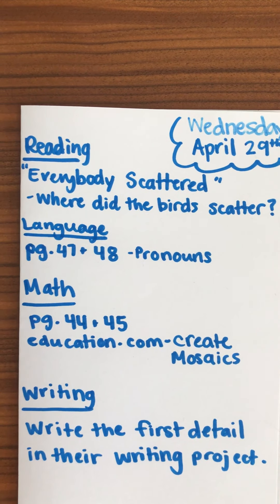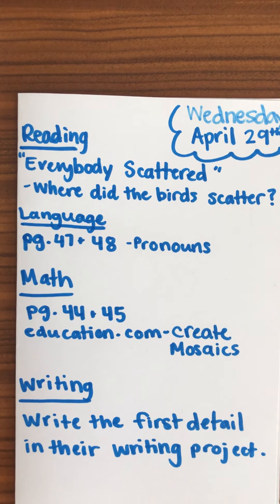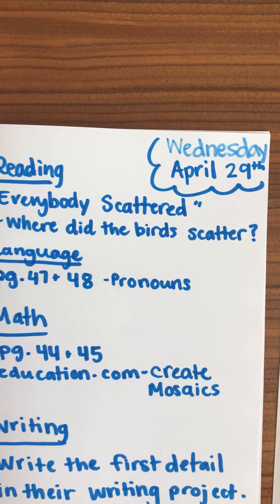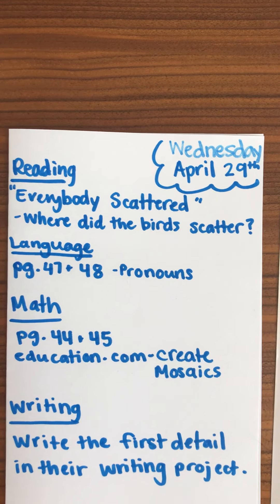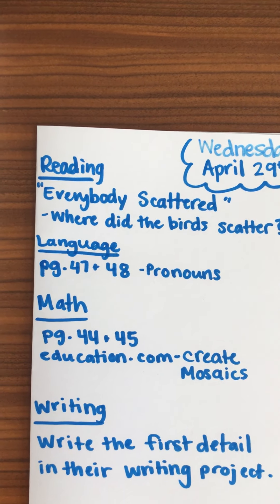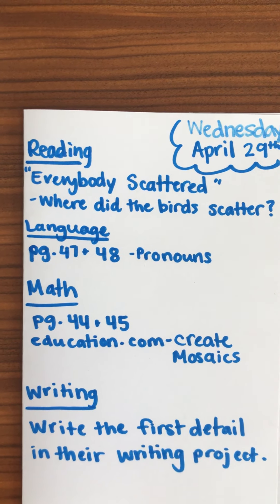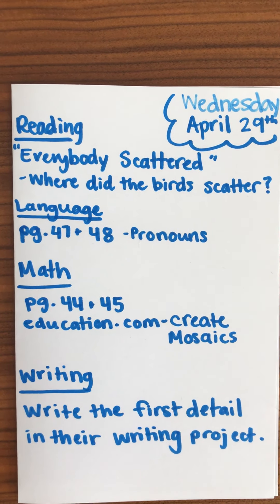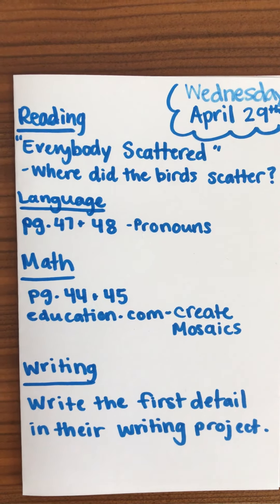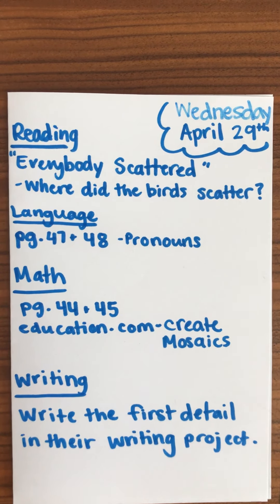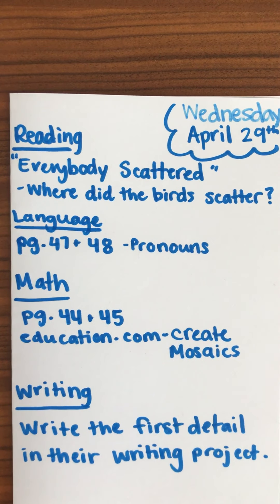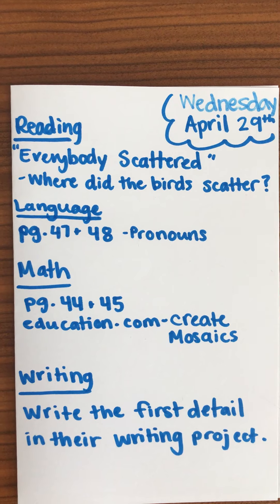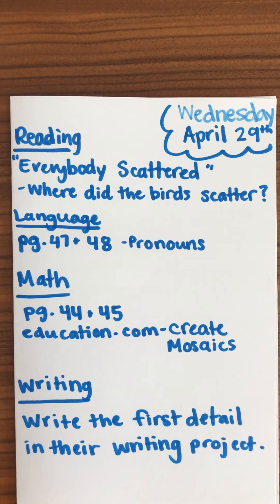I would definitely have that conversation with your child letting them know what it means to scatter, or let them read the book and tell you afterwards what it means to scatter, because I'm sure they'll figure it out as it goes. You'll also be asking them the comprehension question: where did the birds scatter to?